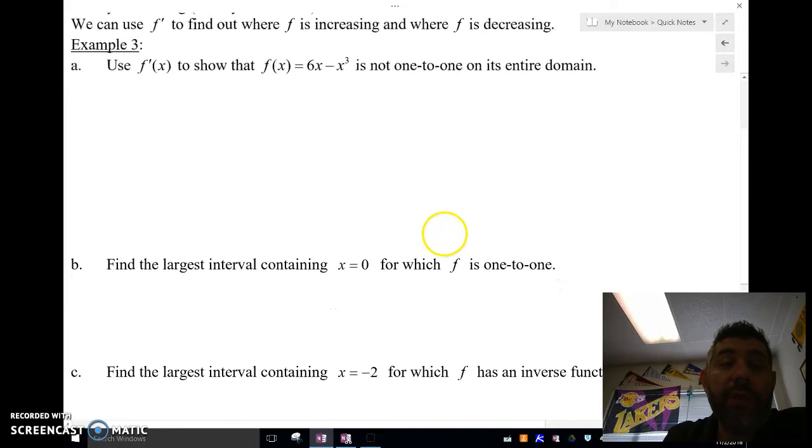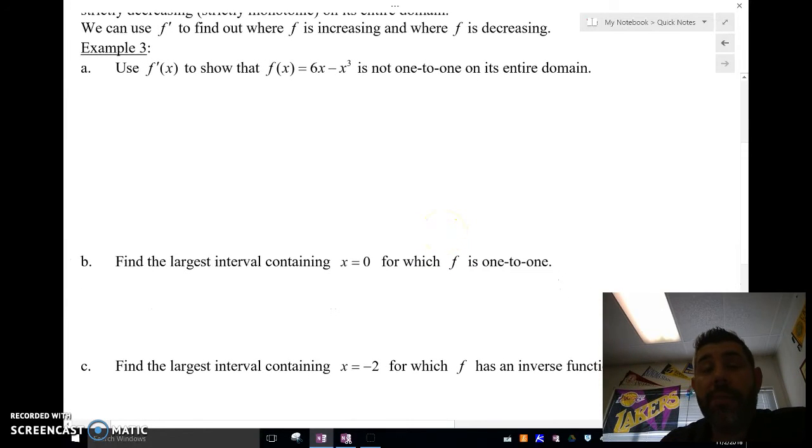We'll use f prime to show that f of x equals 6x minus x cubed is not one-to-one on its entire domain. So what we're trying to do is show that it is not monotonic, because a one-to-one function is going to be monotonic, meaning always increasing or always decreasing.